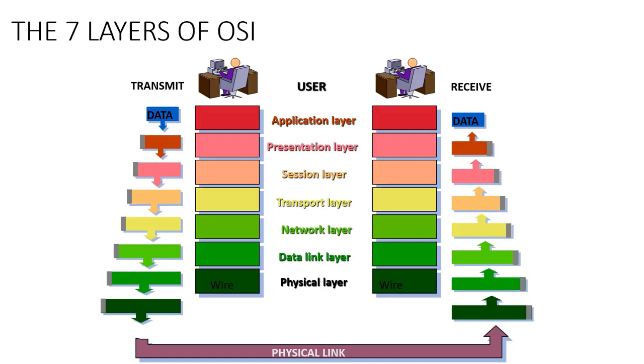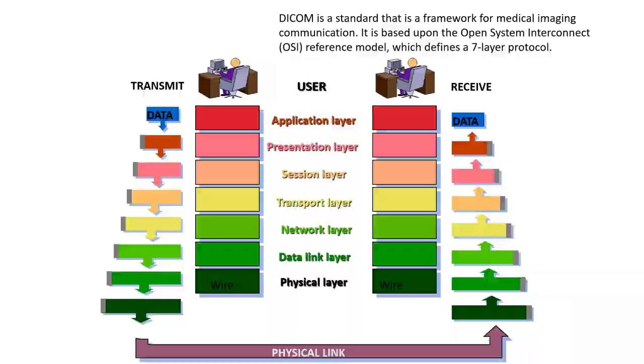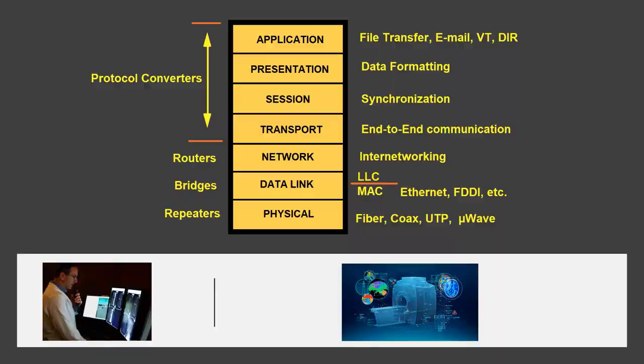The seven layers of the OSI operating systems information model shows how we can send data and receive data. DICOM is a standard that is a framework for medical imaging communication. Take a moment to look at the function of each one of the layers that represent how we utilize DICOM for communicating imaging and text.